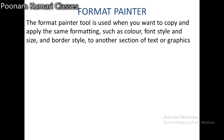First topic: Format Painter. The Format Painter tool is used when you want to copy and apply the same formatting — such as color, font style and size, and border style — to another section of text or graphics. So the Format Painter tool is used to copy formatting from one section and apply it to another section of text. Then we can apply the Format Painter.